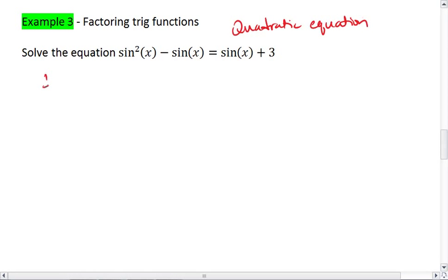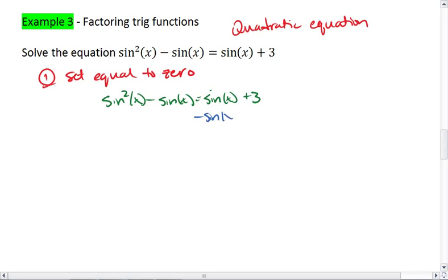So what we're going to do first is set your equation equal to 0. We start with sin²(x) - sin(x) = sin(x) + 3. We're going to subtract sine from both sides. We're also going to subtract 3 from both sides. This will give us sin²(x) - 2sin(x) - 3 = 0.